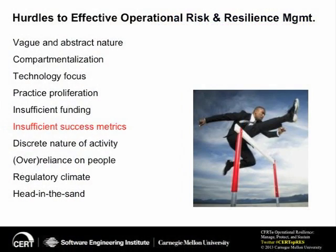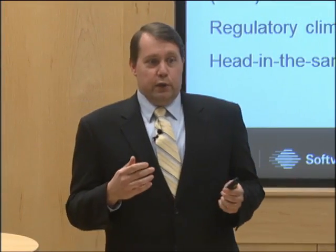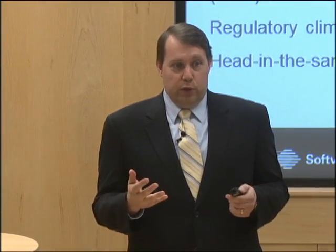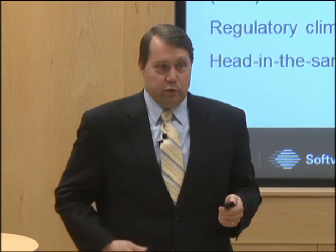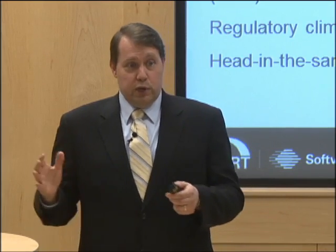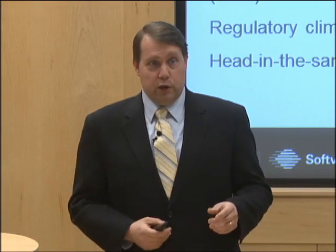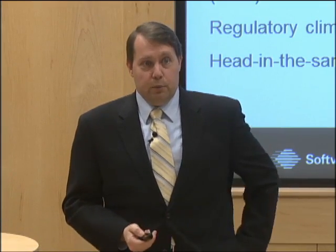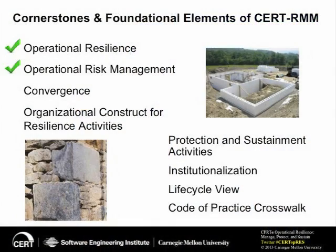What are some hurdles or barriers to effective operational risk management? There are a number of them listed, but the one highlighted as a key takeaway is insufficient success metrics. Measurements drive behavior, and if the organization either has incomplete or not well-defined metrics, or has metrics that cause siloing of activities rather than the convergence we talked about, that can be an inhibitor to moving forward.